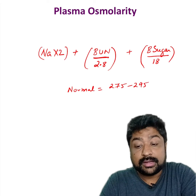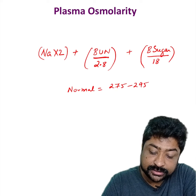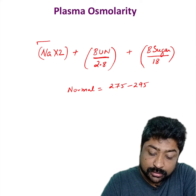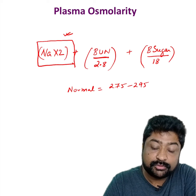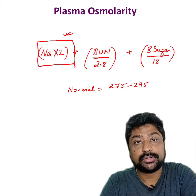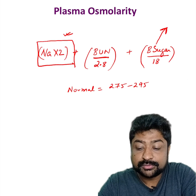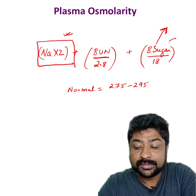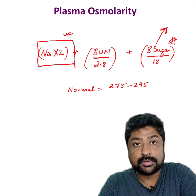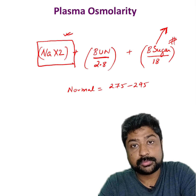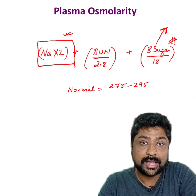Two very important things: if you look at this equation, the majority of plasma osmolarity is governed by your serum sodium levels. However, when the blood sugar level becomes very high, then blood sugar levels also start to play a role in your plasma osmolarity. So this is how you calculate your plasma osmolarity.